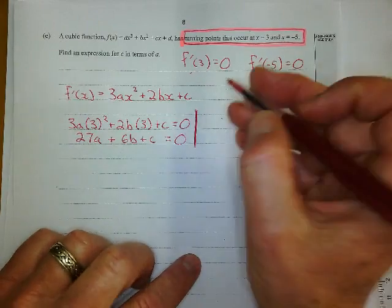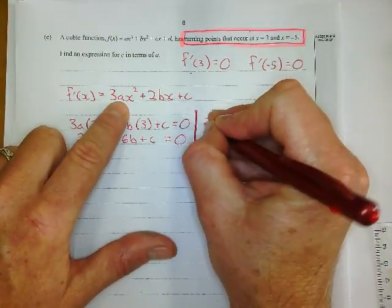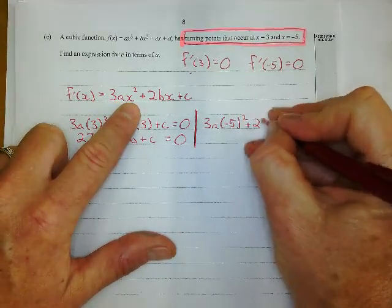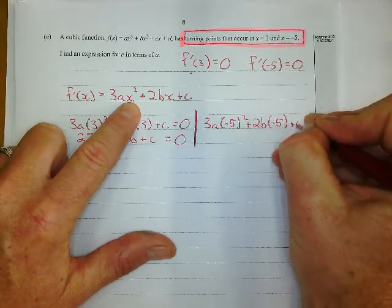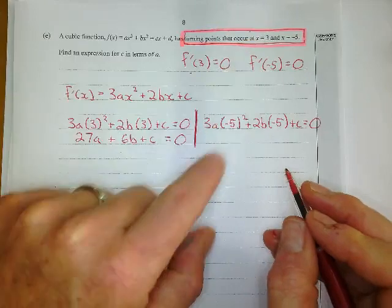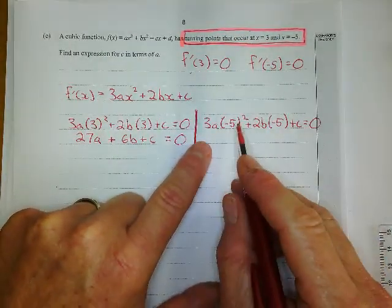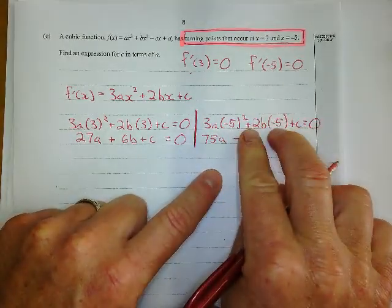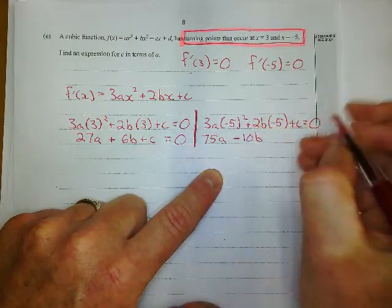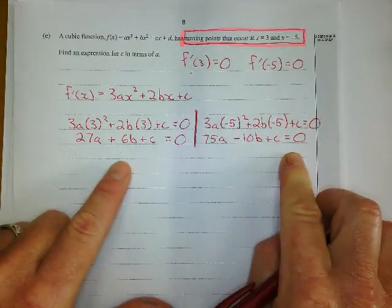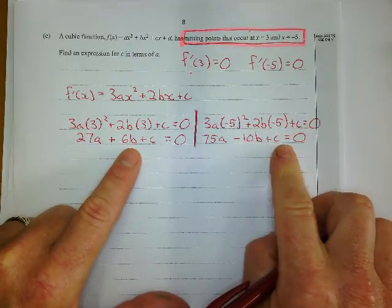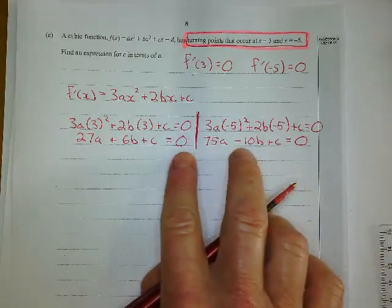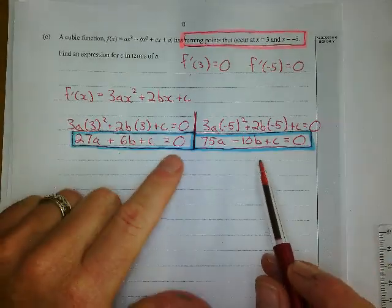And so I did the same with negative 5. I said, I'm going to throw in negative 5 in here and see what I get. I get 3a times negative 5 squared plus 2b times negative 5 plus C, and that's going to equal 0 as well, because it told me. Well, it didn't tell me it would equal 0, but it's a turning point, and we should know that. Anyway, 25 times 3 is 75. I get 75a. 2 times negative 5 is negative 10. Negative 10b plus C equals 0. Now here, to be honest, I didn't really know what to do, but I know both these expressions equal 0. So, well, first of all, these are good expressions. I'm just going to pause right here, because I'm going to come back to these later.